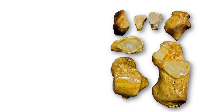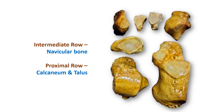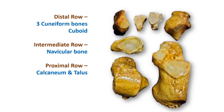Proximal row bones are calcaneum and talus. Intermediate row is formed by the medially placed navicular bone. Distal row is formed by the laterally placed cuboid and 3 cuneiform bones: medial, intermediate, and lateral.